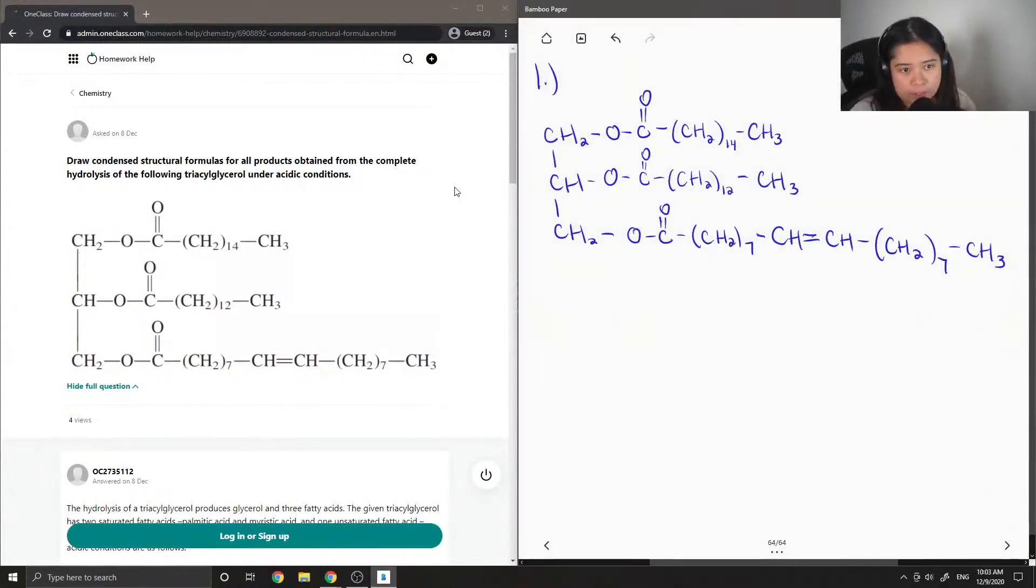So here is the structure that was given in the question. And when we have a hydrolysis of a triacylglycerol in general, our products are glycerol plus the three fatty acids.